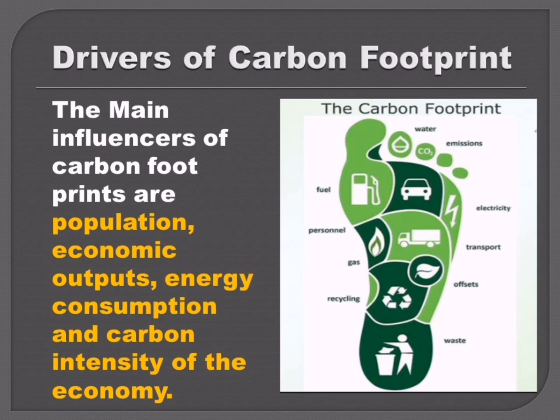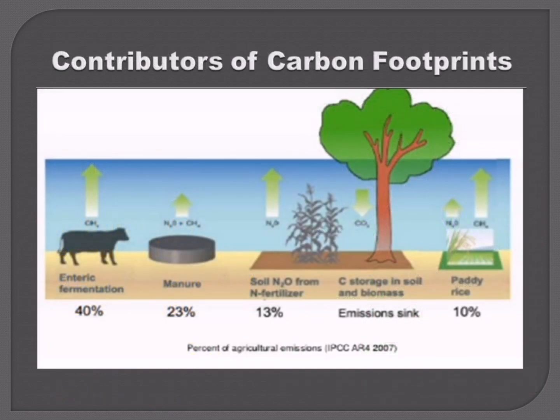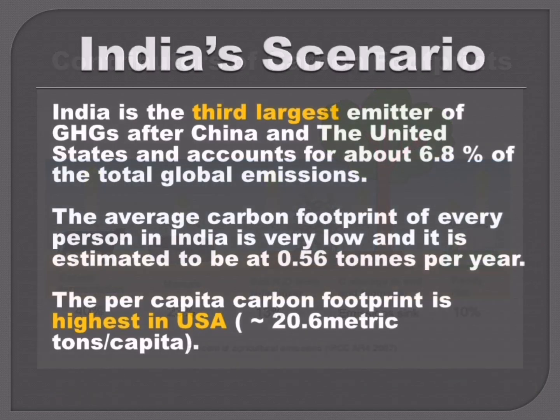The main influences of carbon footprint are population, economic outputs, energy consumption, and carbon intensity of the economy. Electricity alone is responsible for about 37% of carbon dioxide emissions. India is the third largest emitter of greenhouse gases after China and the United States, and accounts for about 6.8% of total global emissions. However, the average carbon footprint of every person in India is very low, estimated to be 0.56 tons per year. The per capita carbon footprint is highest in the United States at present.